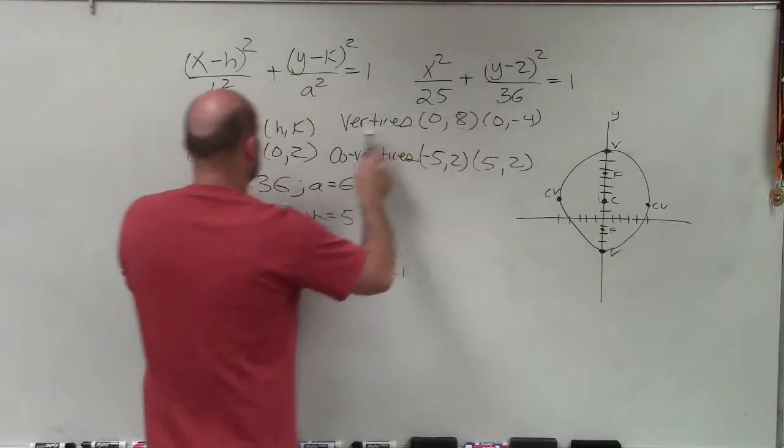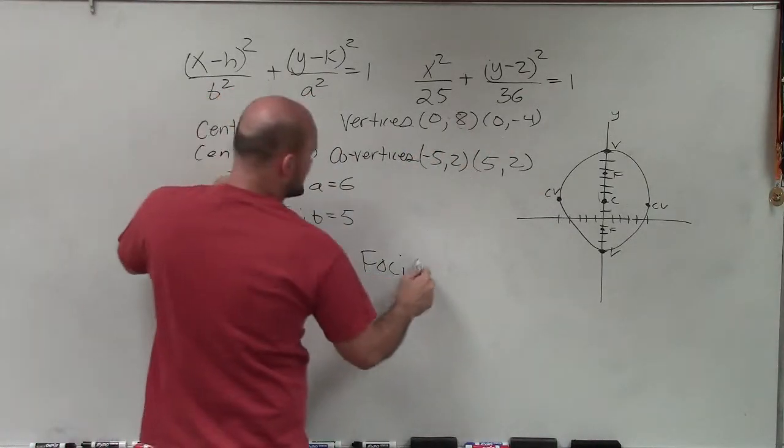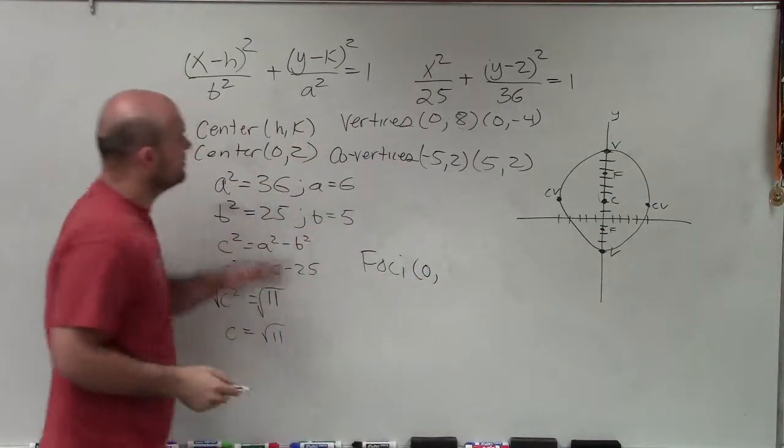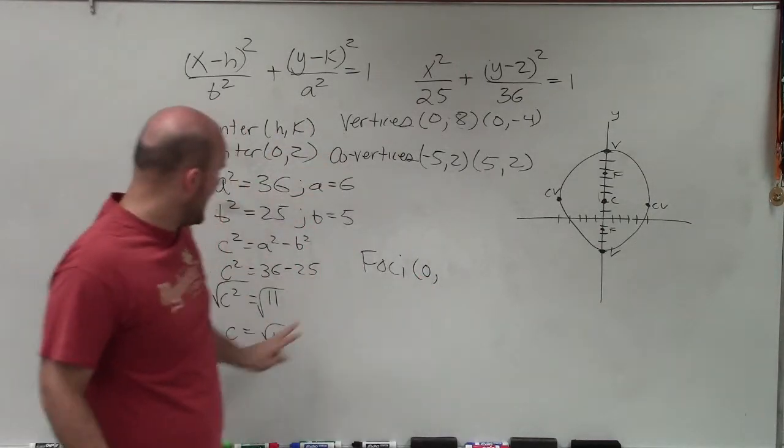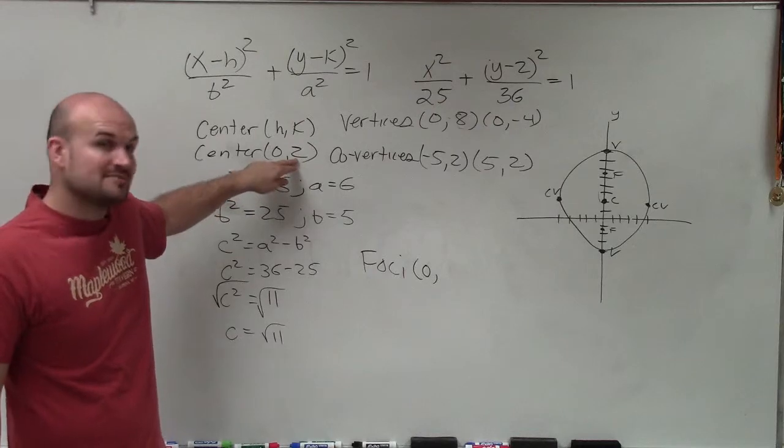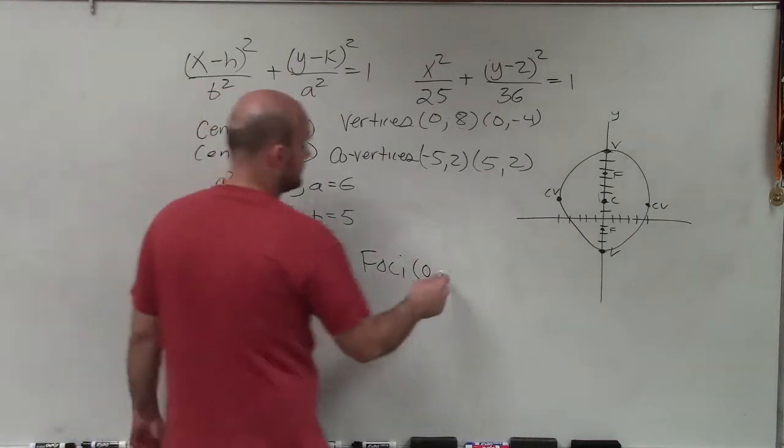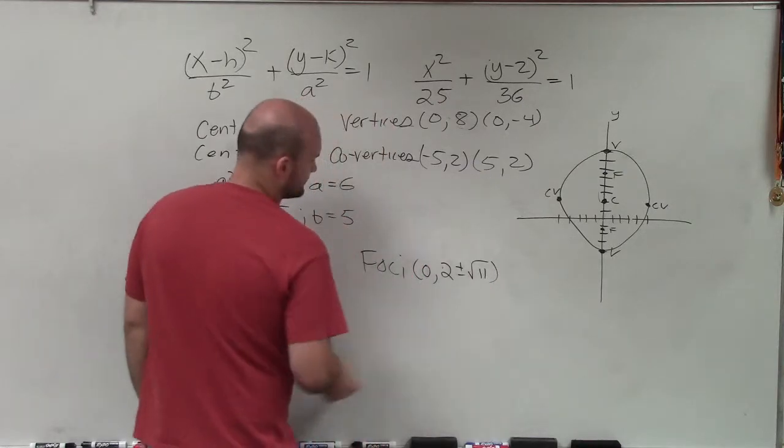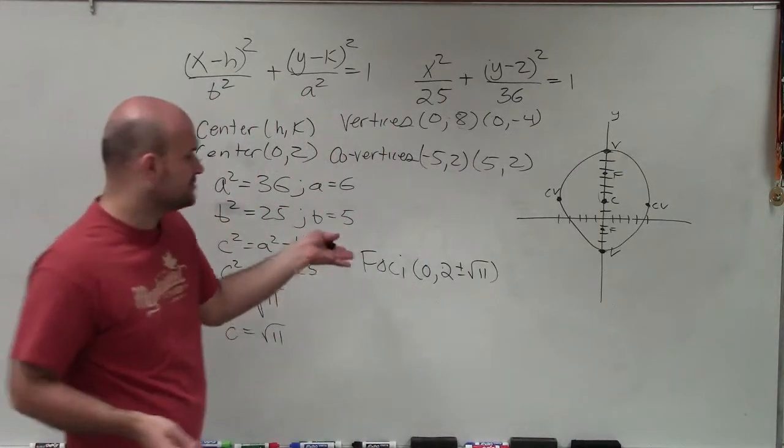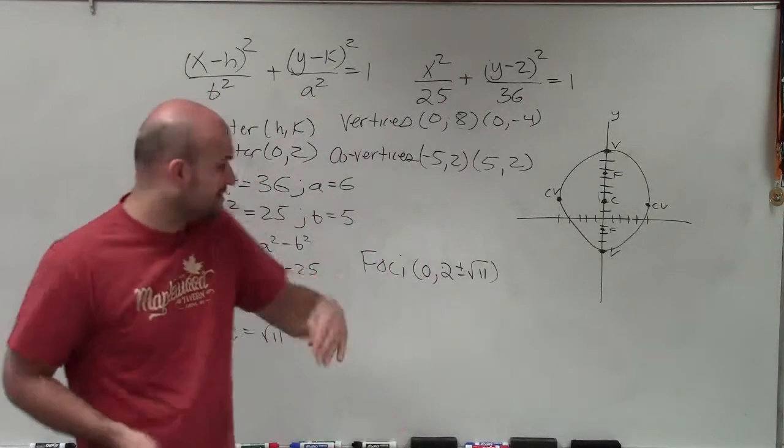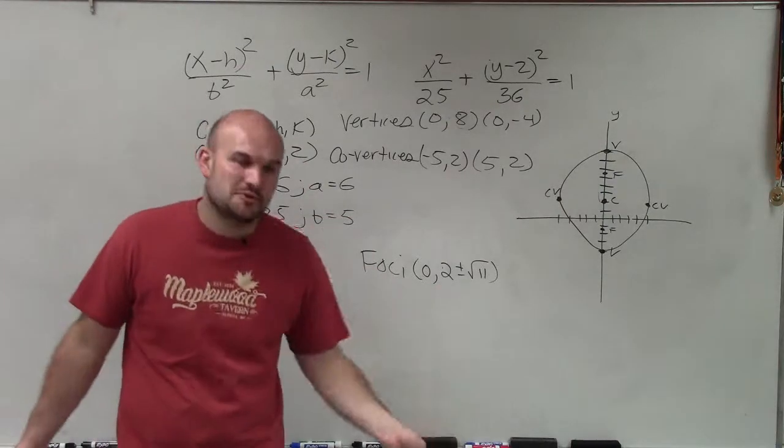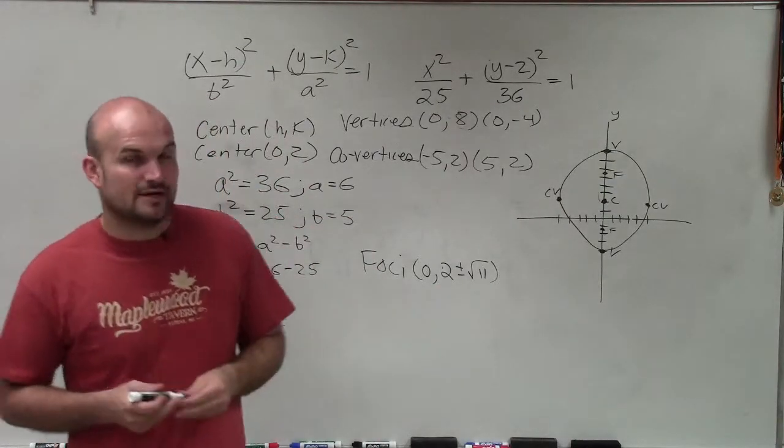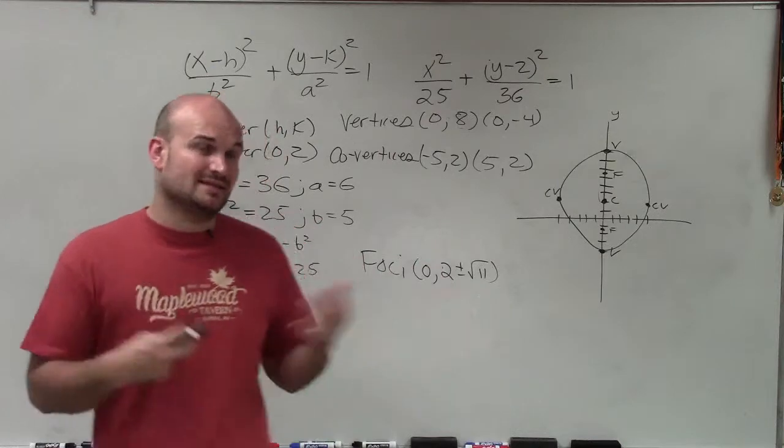So therefore, it's going to be 0, comma. Now all I'm doing is I'm adding the square root of 11 to 2, and I'm subtracting the square root of 11 to 2. So I can write that as 2 plus or minus the square root of 11. And you can break that out into 0, 2 plus the square root of 11 and 0, 2 minus the square root of 11. But since the square root of 11 is an irrational number, we like to leave that in our answer.